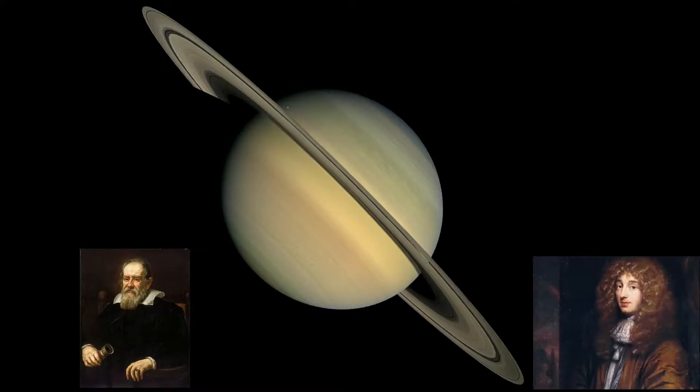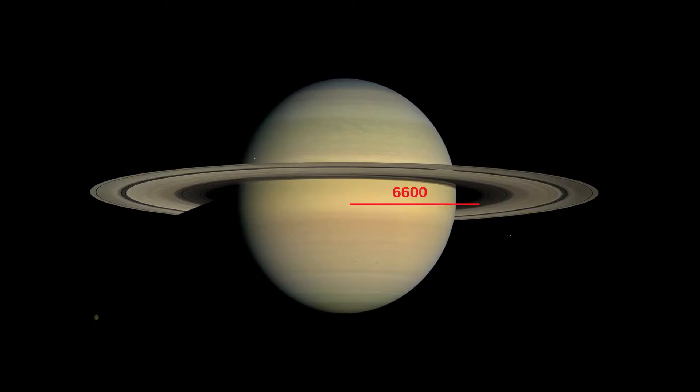In 1655, Christian Huygens was the first person to describe them as a disk surrounding Saturn. The rings extend from 6,600 to 121,000 kilometers outward from Saturn's equator and average approximately 20 meters in thickness.